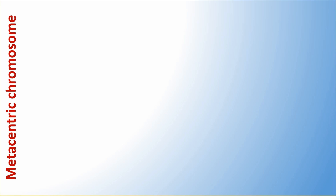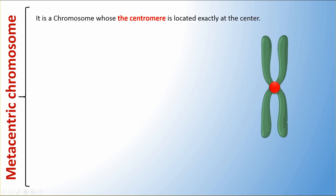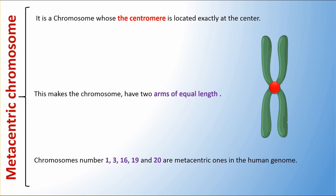A metacentric chromosome is one whose centromere is located exactly at the center, making the chromosome have two arms of equal length. Chromosomes 1, 3, 16, 19, and 20 are metacentric ones in the human genome.